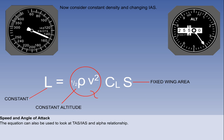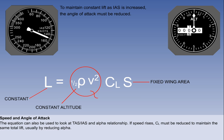The lift formula can also be used to look at the relationship between speed and angle of attack at a constant altitude. As before, if one element of the equation is increased, another must be reduced. As speed rises, the CL must be reduced to maintain the same total lift, normally by reducing the angle of attack.